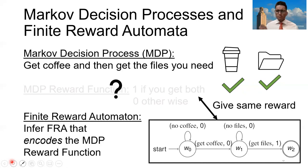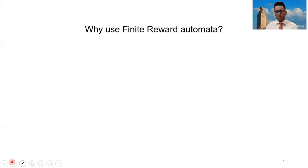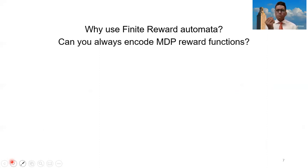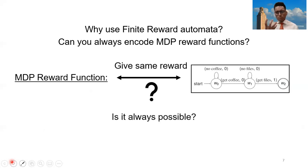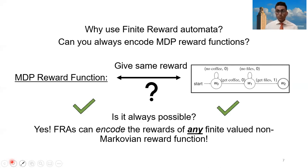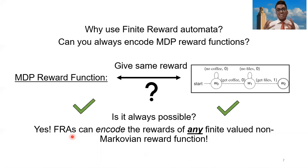Before we go to our algorithm, some of you may ask: why are we using finite reward automatons? How can you be sure that an automaton can always encode MDP reward functions? The answer is yes — we show in our paper that for any finite-valued non-Markovian reward function, you can find an FRA, or finite reward automaton, that encodes the rewards from that reward function. This makes it powerful because any situation modeled by a finite-valued non-Markovian reward function can use our method.